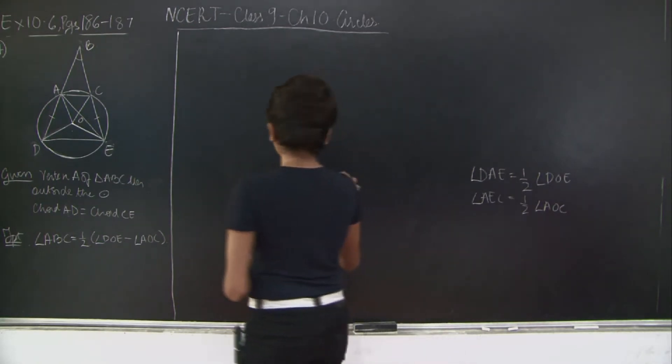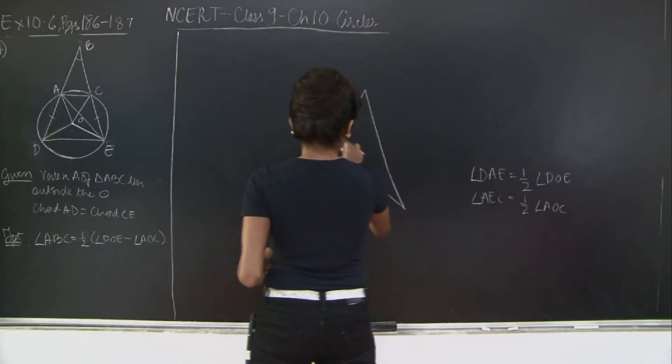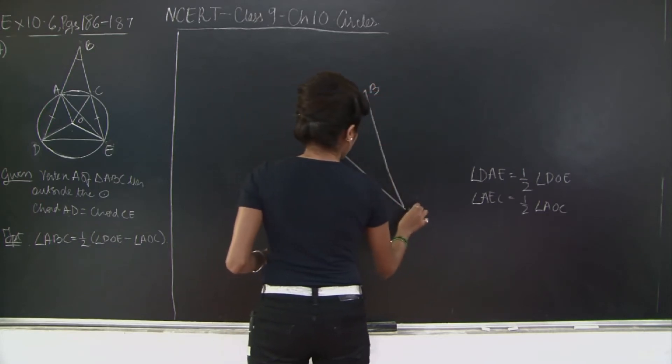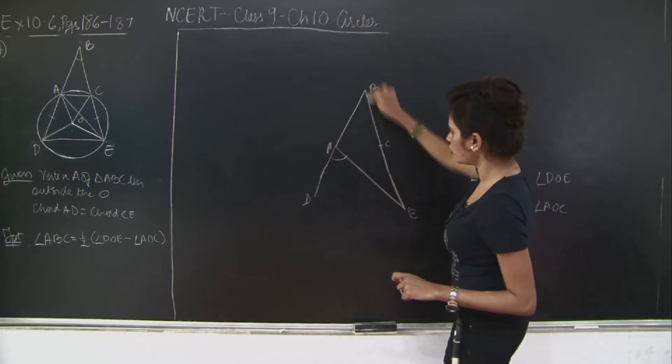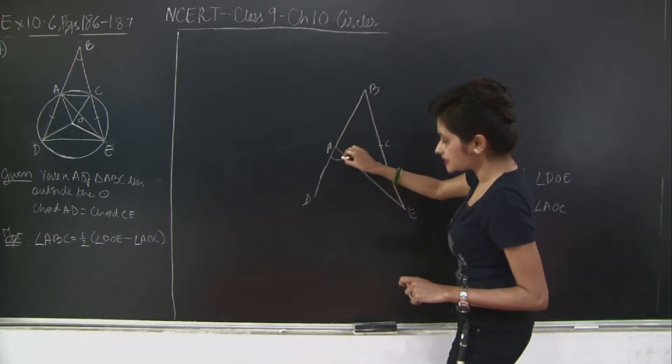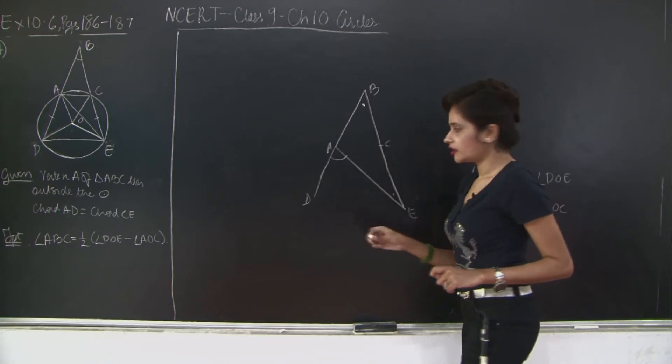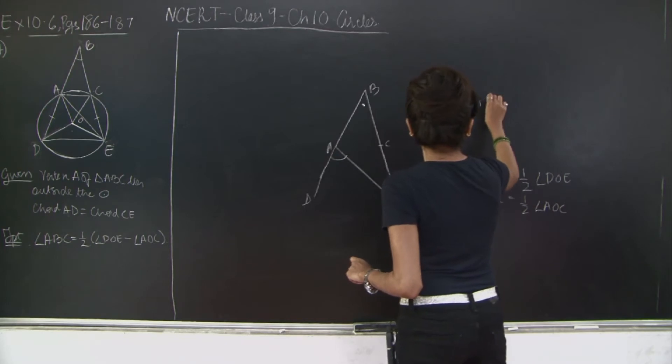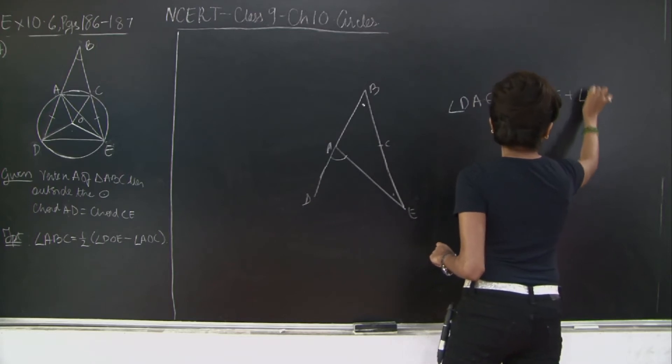If you still don't get it, let's draw it and understand. So I have triangle ABE, and I have let's say a point C over here. So this angle is the exterior angle of this triangle. Therefore this angle is going to be the sum of this angle plus this angle. Then see, I get DAE is equal to angle ABE plus angle AEC.